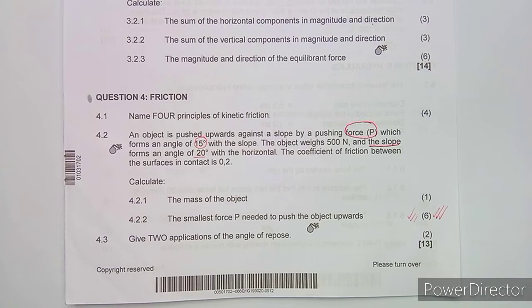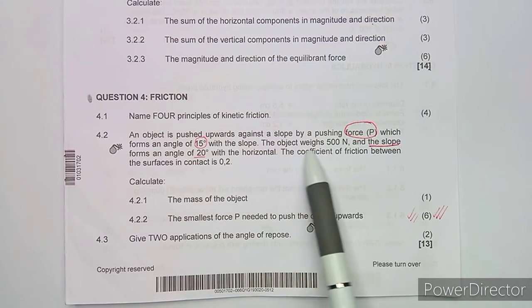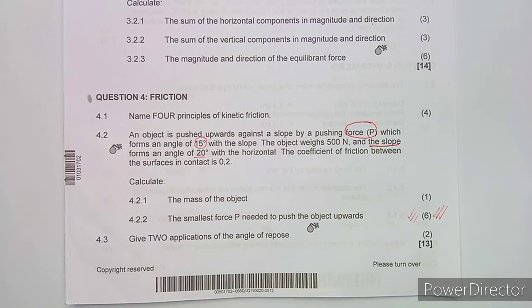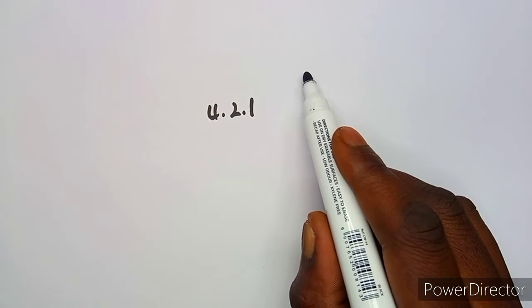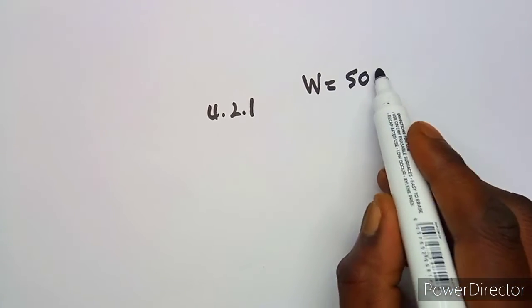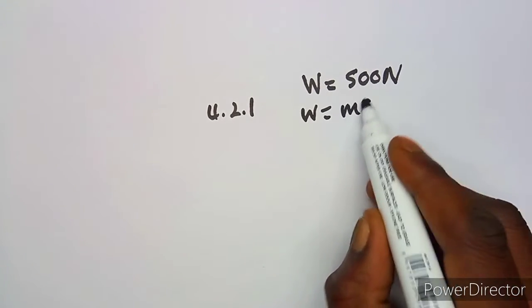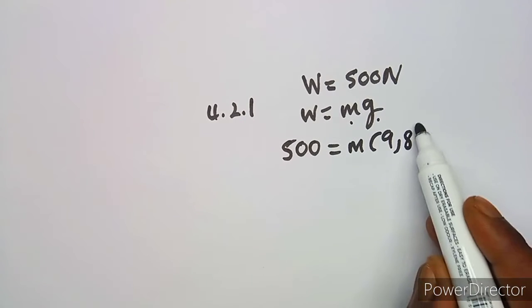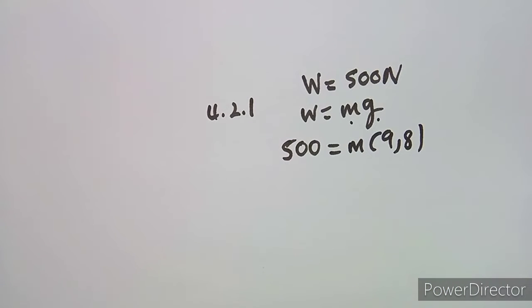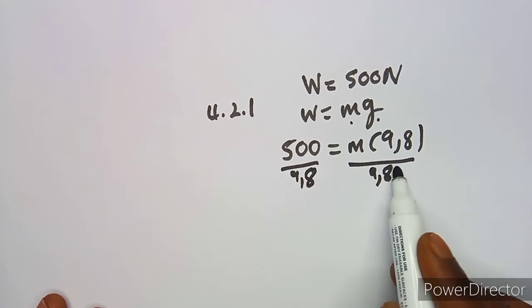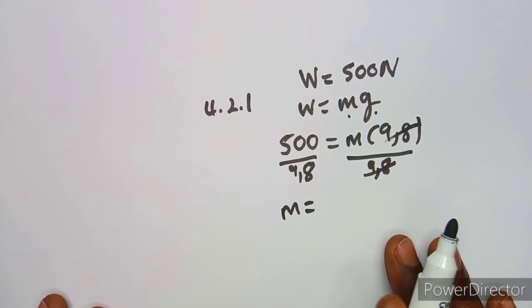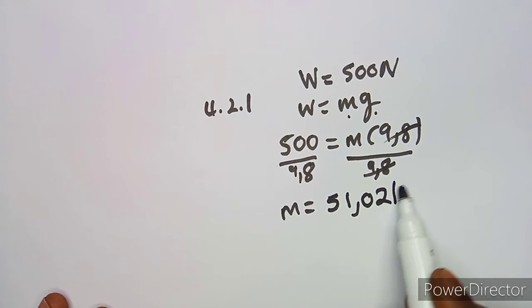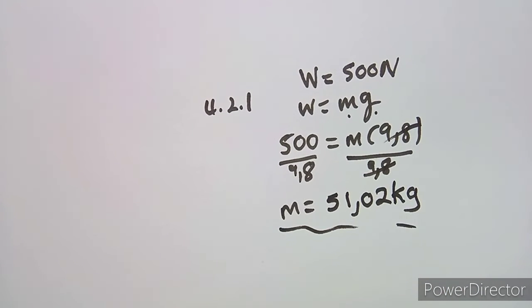The first part asks us to calculate the mass of the object. Since the object weighs 500 Newtons, we use weight equals mg. So 500 equals mass times 9.8, and dividing both sides by 9.8, our mass is 51.02 kg.